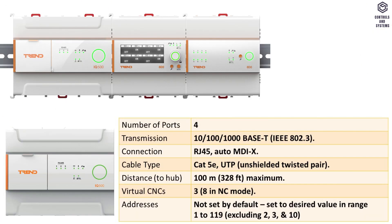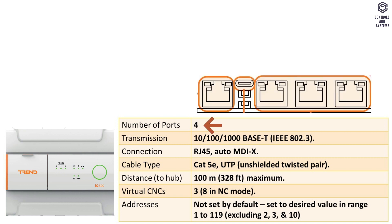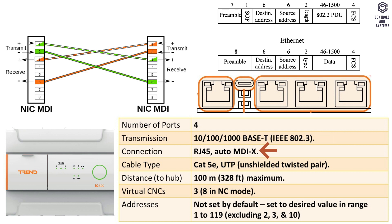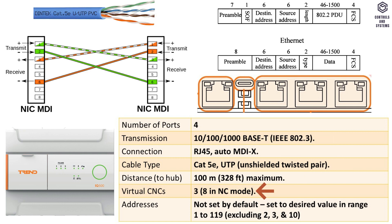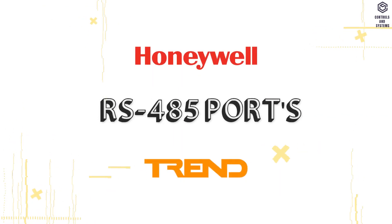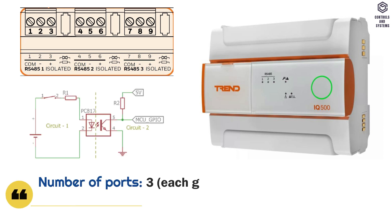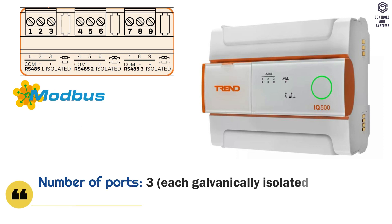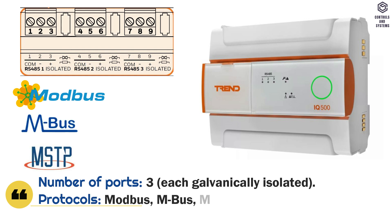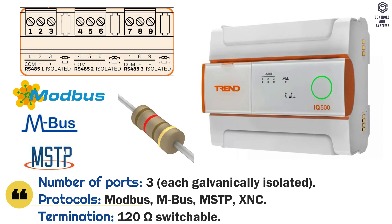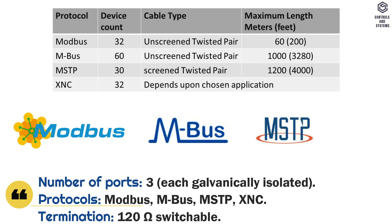Ethernet network: this table indicates the specifications and ranges of number of ports, transmission, connection, cable type, distance, virtual CNCs, and addresses. RS-485 ports: number of ports is 3, each galvanically isolated. Protocols are Modbus, MBus, MSTP, and XNC. Termination is 120 ohms switchable. This table indicates the specifications of protocols, device count, cable types, and maximum length.